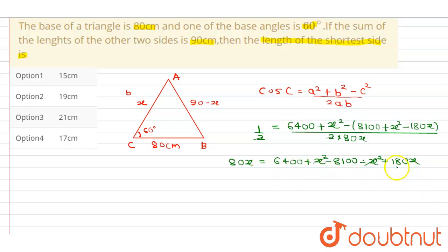And we will be left with, if we take this 180x to the left hand side, we will get -100x. -100x = 6400 - 8100 will be -1700.